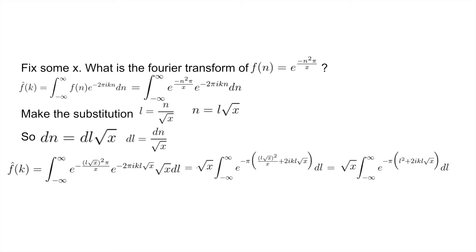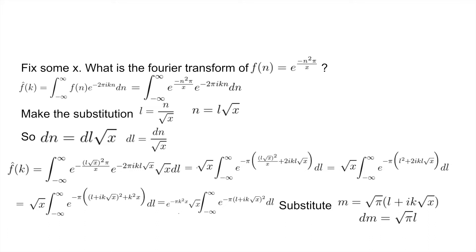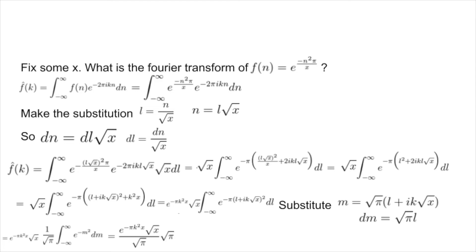After simplification, we complete the square to replace l squared plus 2ikl root x by l plus ik root x, all squared, plus k squared x. We pull out e to the power of negative pi k squared x. Then making the substitution m equal to square root of pi times l plus ik root x, so dm equals square root of pi times dl, we get e to the power of negative k squared x over root x, times one over root pi, times the integral of e to the negative m squared dm. Since that integral equals square root of pi, the square roots cancel and the final answer is e to the power of negative pi k squared x, times square root of x.